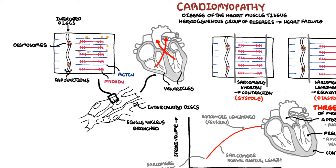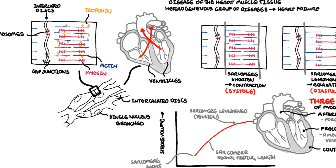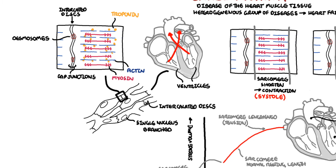Troponin is attached to these structures and is important in muscle contraction. Cardiomyocytes also contain many mitochondria to produce large amounts of ATP, which is needed because the heart muscles are constantly demanding this energy — it's constantly pumping.